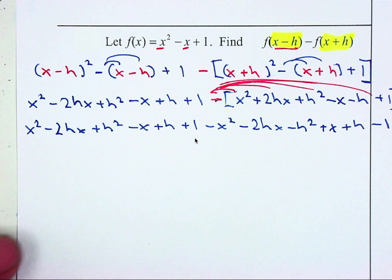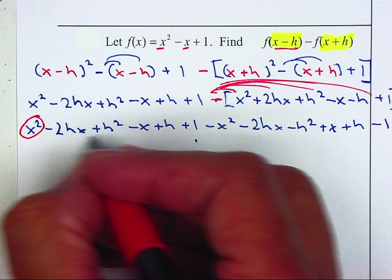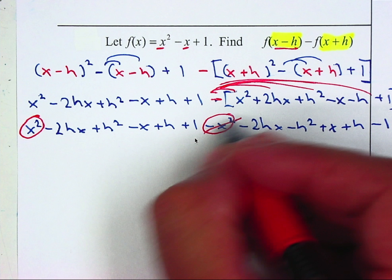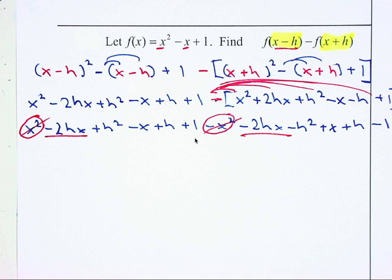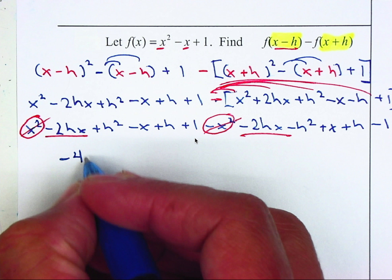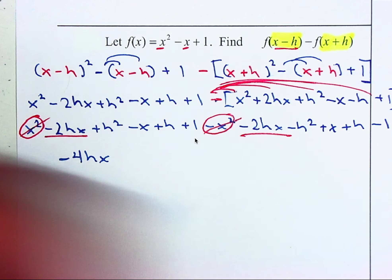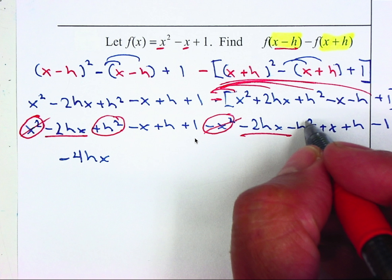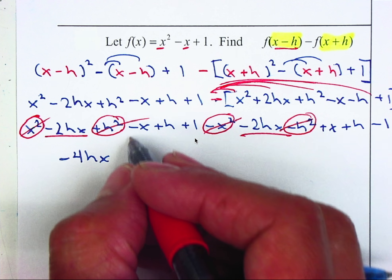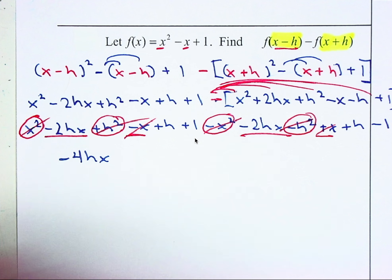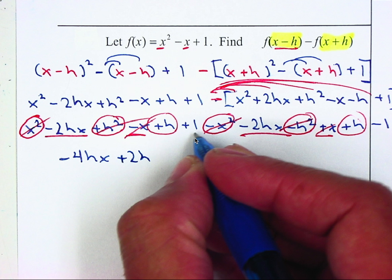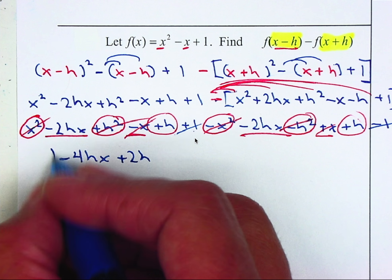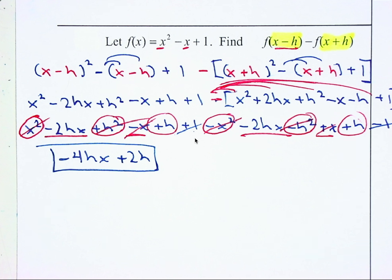Starting with x squared: one negative and one positive — they cancel. The 2hx terms give negative 4hx. The h squared terms cancel. Then h and h give 2h. And one minus one cancels. So the simplified result is negative 4hx plus 2h. You just have to be careful with all the variables and make sure you organize your work.